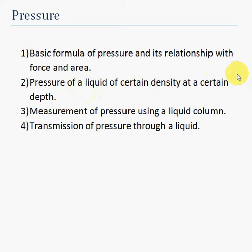The second one is the pressure of a liquid of a certain density at a certain depth. For example, if you are 10 meters underneath a swimming pool, what is the pressure exerted on you due to the column of water above you? The relationship is h*rho*g, where you have to remember that rho is the density of the liquid.